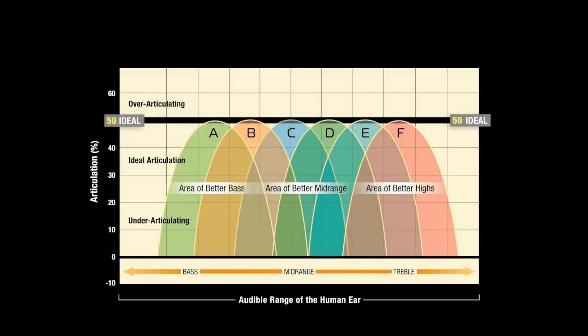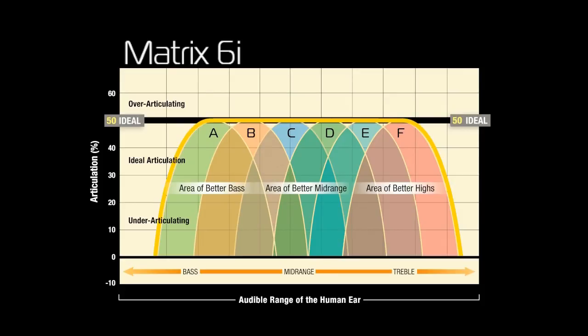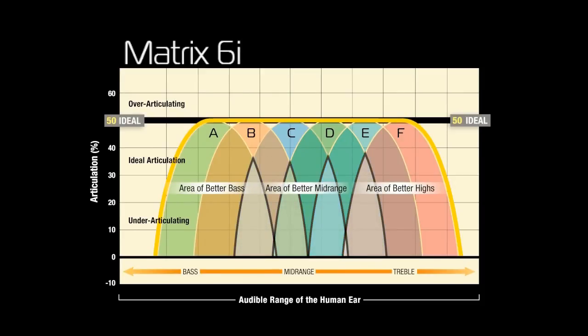Conversely, a Matrix 6 interconnect includes six poles of articulation, shown here as plots A through F. Six poles of articulation provide an even wider bandwidth of articulation, represented here by the yellow line. Now note that in the Matrix 6 plot, there are multiple regions where the poles of articulation overlap one another. These intersecting regions provide increased density in the presentation, resulting in a more realistic timbre and richer textures throughout the audio spectrum.